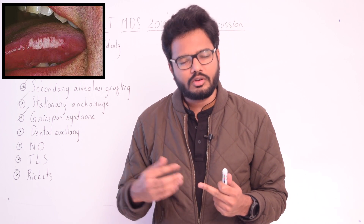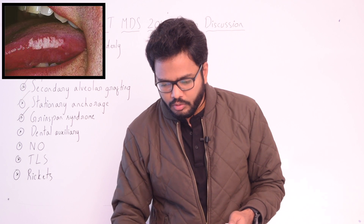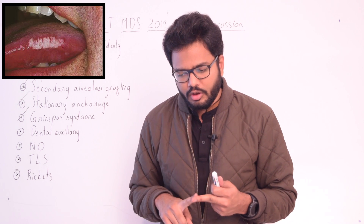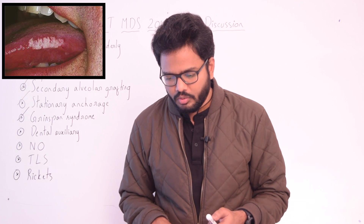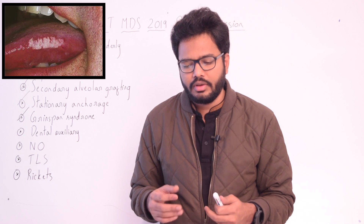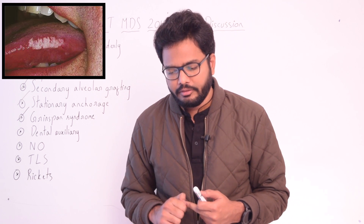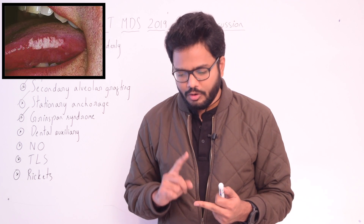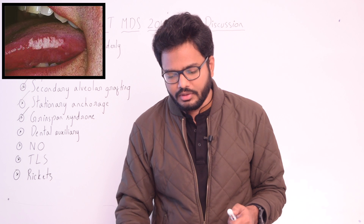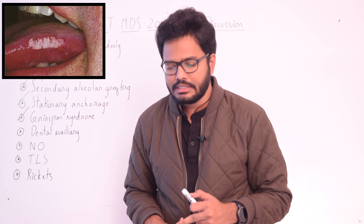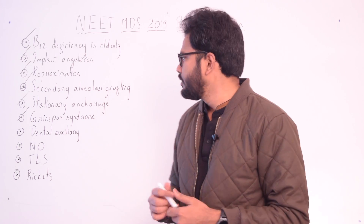Oral hairy leukoplakia is also called a Greenspan lesion because it was first described by a scientist named Greenspan. It is a white hyperplastic, vertically corrugated lesion occurring on the lateral border of the tongue, caused by Epstein-Barr virus. Oral hairy leukoplakia may be the first sign of HIV infection in some patients. It was first described by Greenspan in 1984 as asymptomatic, white, non-scrapable, vertically corrugated, hyperkeratotic, hair-like projections on the lateral border of the tongue.